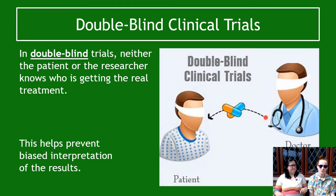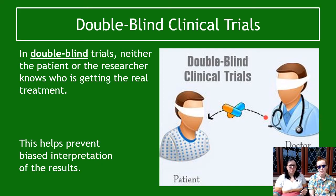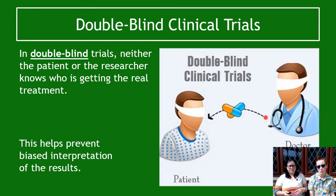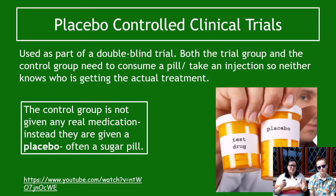Double blind clinical trials are ones where both the doctor and the patient don't know what they're getting. If the patient doesn't know what they're receiving, they won't try to affect the result either way. For the researcher — the person who made the drug — not knowing is also important, because then they won't be biased. They won't think 'they've got a placebo, never mind' or try to prove favorable results for those taking the real drug. So it really prevents any kind of bias when it's double blind.